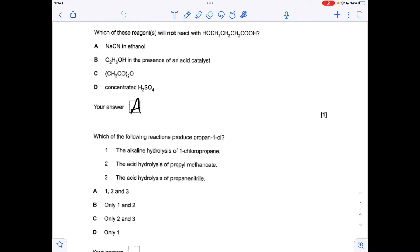And just for revision purposes let's run through the others to explain why they weren't the right answer. Ethanol in the presence of an acid catalyst can react with the carboxylic acid group and make an ester. Acid anhydrides can react with alcohols again to make an ester. And concentrated sulfuric acid can react with an alcohol and dehydrate it to an alkene. So that's why A was the answer.